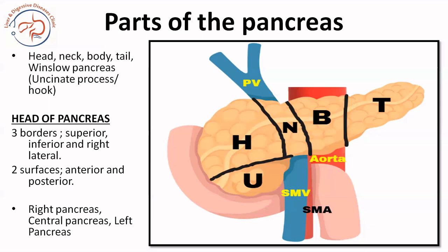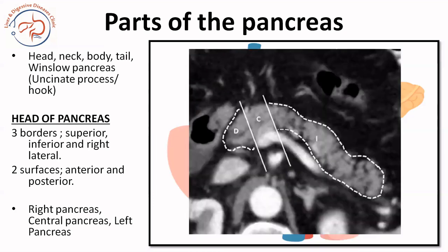Winslow pancreas is basically the uncinate process, or the hook — don't confuse yourself if someone asks you about Winslow pancreas; it is the uncinate process. So head and uncinate process form the right pancreas, the neck forms the central pancreas, and body and tail form the left pancreas. To remember this: D is right pancreas (dextro), L is left pancreas (levo), and C is central pancreas.